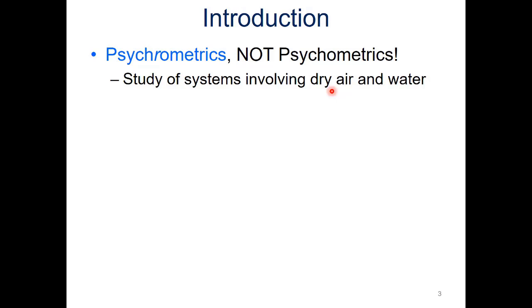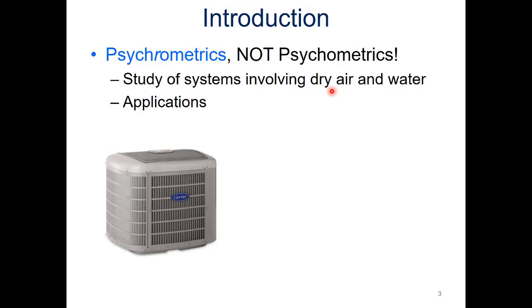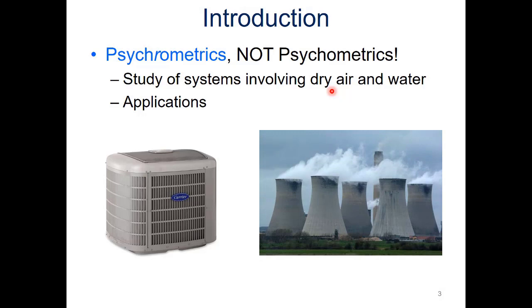Psychometrics is looking at the development and evaluation of psychological tests. The applications we'll see for psychrometrics are obviously AC units that we use in residential areas as well as on an industrial scale with cooling towers — in this particular case, a nuclear application. But we also have other industrial processes where it requires close control of the vapor content within the air.